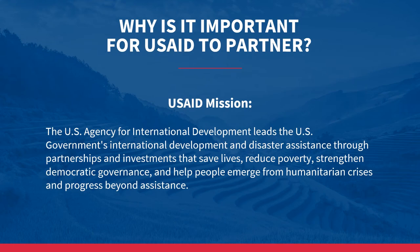Why is it important for USAID to partner with organizations? The answer is in its mission: the U.S. Agency for International Development leads the U.S. government's international development and disaster assistance through partnerships and investments that save lives, reduce poverty, strengthen democratic governance, and help people emerge from humanitarian crises and progress beyond assistance. Through funding, USAID partners with thousands of organizations around the world that share and can contribute to the agency's development goals.